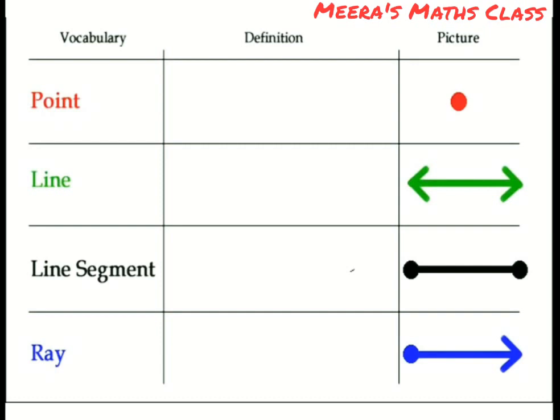Then here is activity for you. You will draw this on a chart paper. You will write the vocabulary, these all are the main points: point, line, line segment, ray. Then you will write the definition and draw a picture of it. As it is given here, point in red color, line green, line segment black or blue. So use these four different colors and do it. You will enjoy my children. I hope you all understood. Thank you.